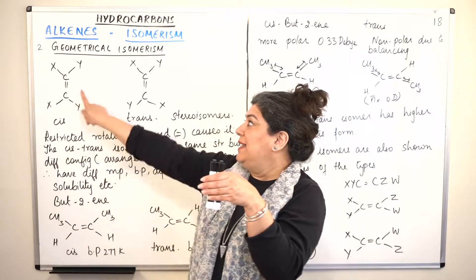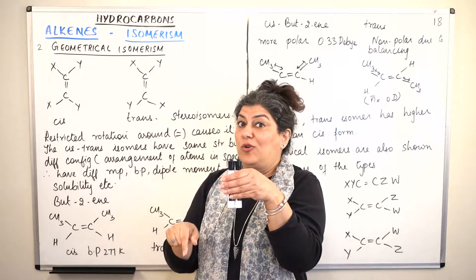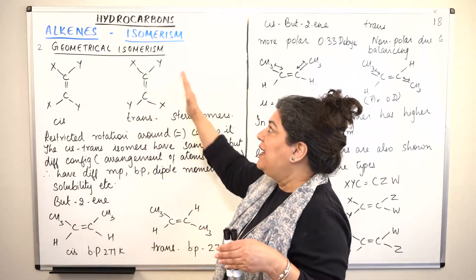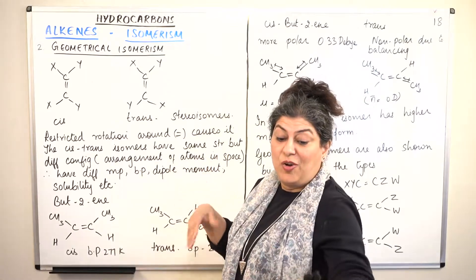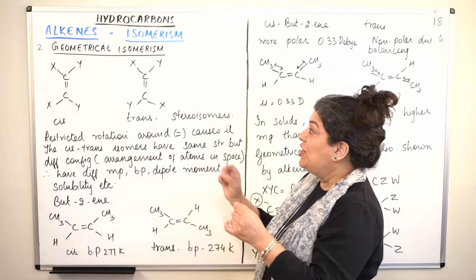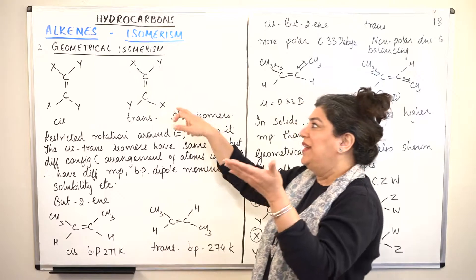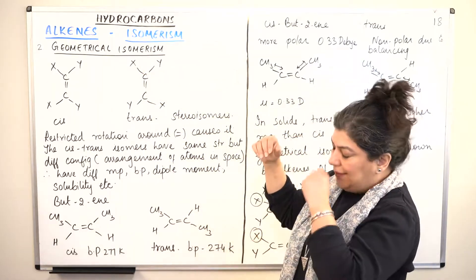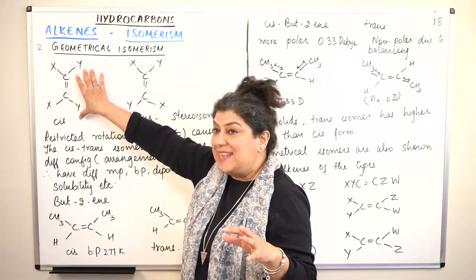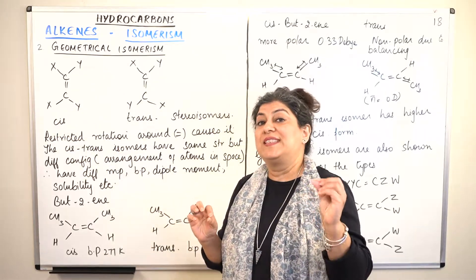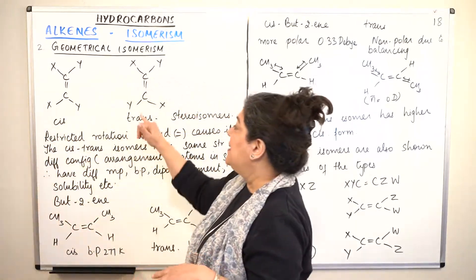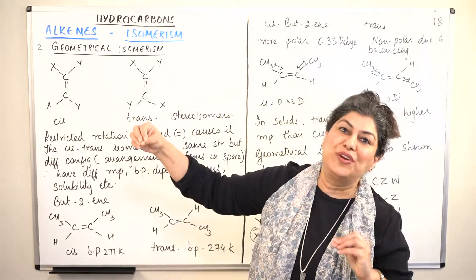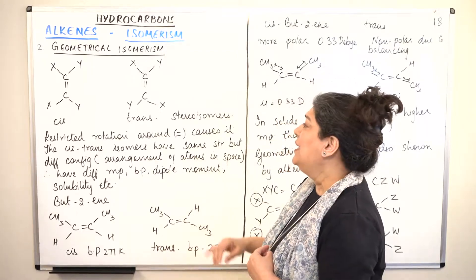If you imagine the double bond as a bridge over a river, in the first isomer x and x are on one side, and y and y are on the other side. In the other isomer x and y are diagonal — one x is on this side of the bridge, the other x is on the other side. These two isomers have been given names: this is the cis isomer, where similar groups fall on the same side, and the second type is the trans isomer, where one of the similar groups has transferred to the other side.